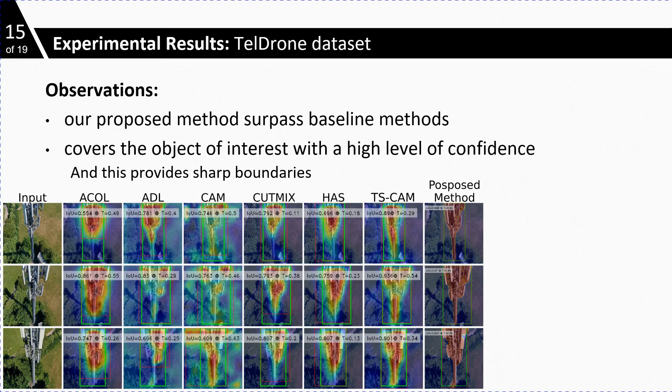Compared to the baseline, our method produces very smooth localization maps with same intensities all over the map. In other words, the generated map has very sharp boundaries and can cover the full object with high confidence.